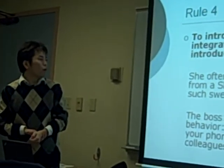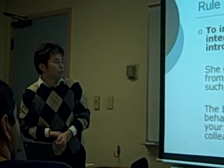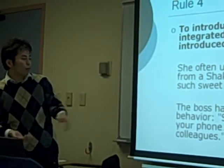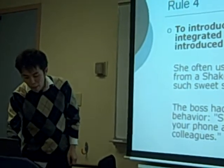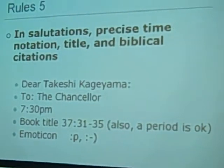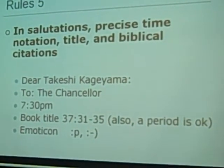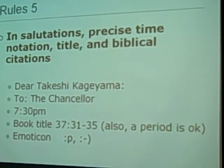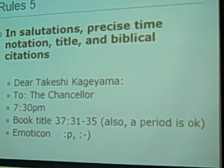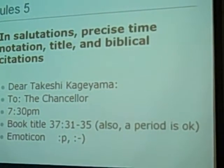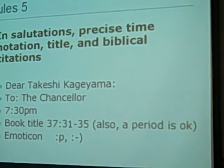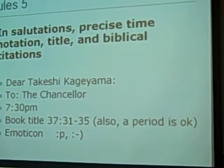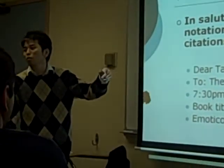Rule five covers additional uses: salutation, precise time notation, title, and biblical citation. In a letter, you write 'Dear Takeshi Kageyama:' or 'To: the counselor.' For time, the colon goes between the hour and the minutes on a clock. In a bibliography, you may use a colon between a book title and page range, such as '37:31–35.' You can also use a comma in these situations — either one is fine.